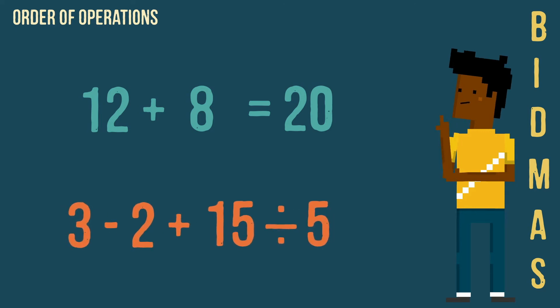In this next example, we can see there are no brackets, no indices but there is a division so we calculate this first. We are then left with addition and subtraction. As addition and subtraction are carried out in the order they appear, here we would calculate the subtraction first followed by the addition.